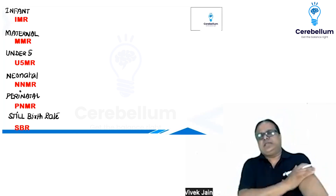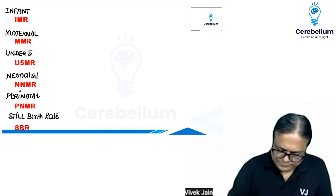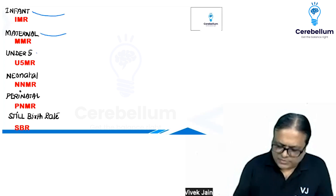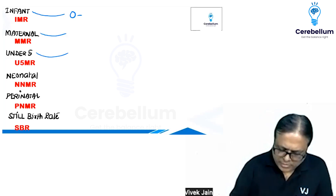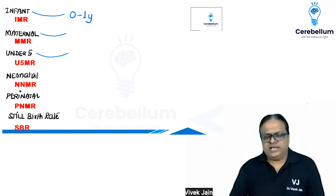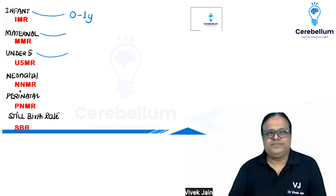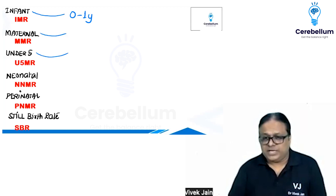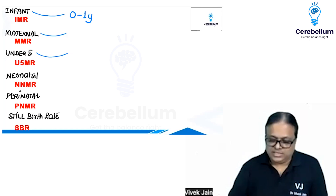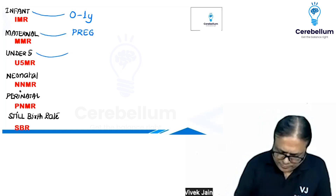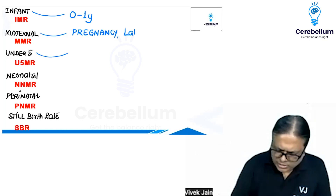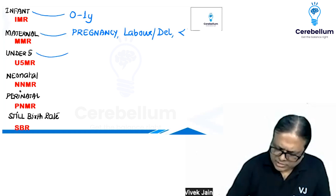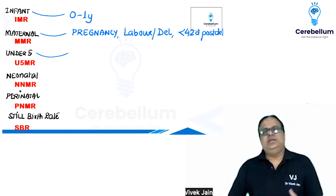Before we proceed, who is an infant? An infant is zero to one year. What is a maternal death? A maternal death is death of a mother at any time in pregnancy — so death in the first week of pregnancy counts. The answer is yes — any time in pregnancy, any time in labor or delivery, or any time within 42 days post-delivery is a maternal death.